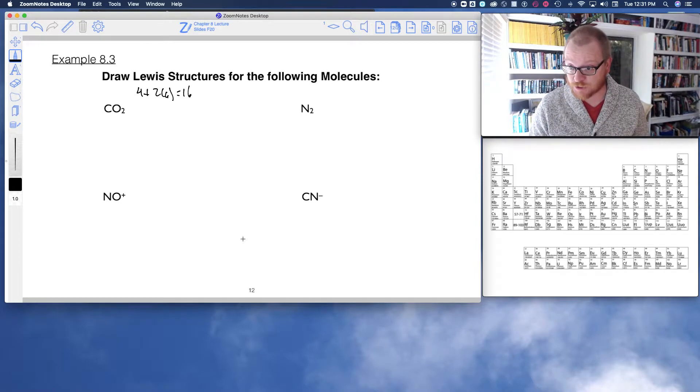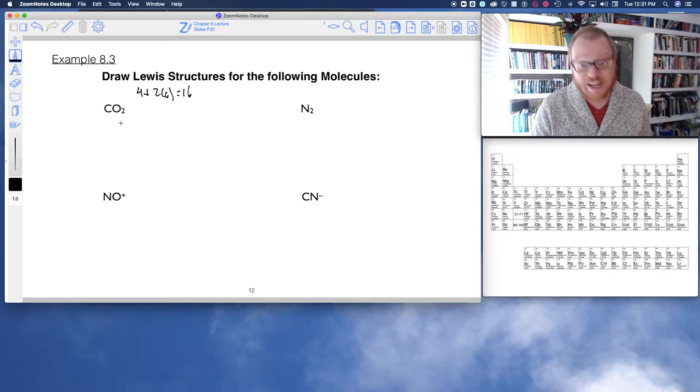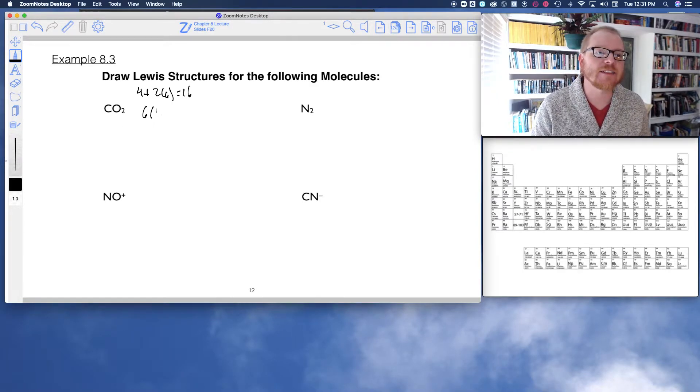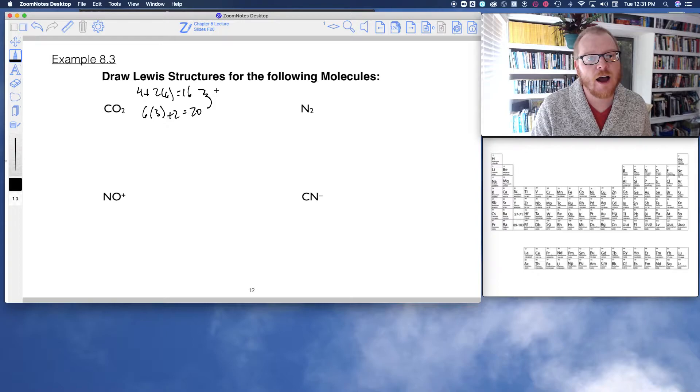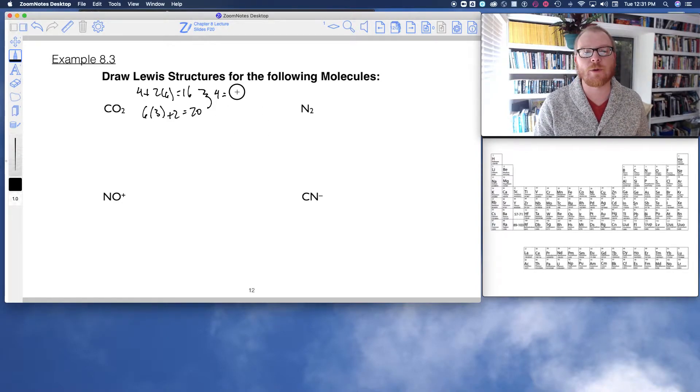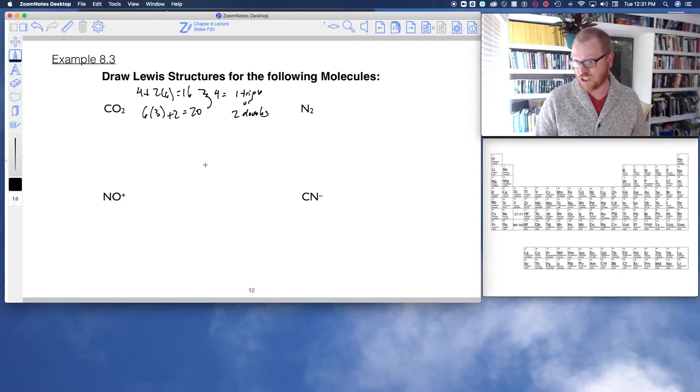Now I'm going to do the 6n plus two rule, Clark's rule. So there's three atoms in this molecule and none of them are hydrogen, so I can say six times three plus two, and that gives me 20. And because there is a difference of four, that's going to either equal one triple or two doubles.